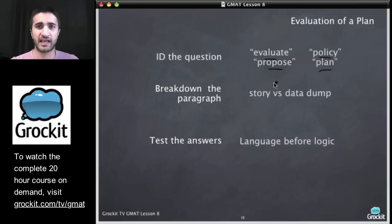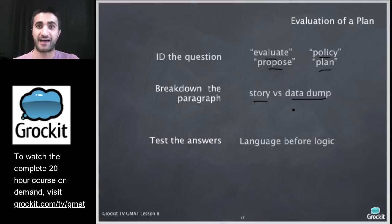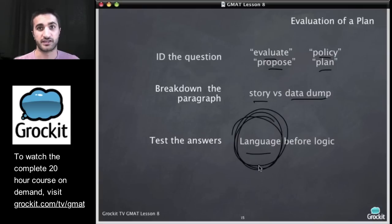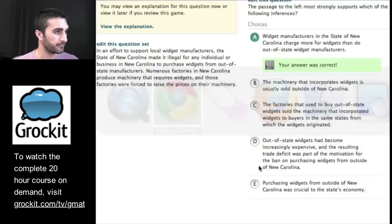Pretty straightforward to identify. Once we do, we can expect the paragraphs are going to either be a story or some big data dump. They're going to give us a bunch of data and they're going to ask us to evaluate it or propose what to do next. And, really, on these ones, we've got to concentrate on language before logic. It's going to really help us eliminate answer choices. Let's take a look at some examples.